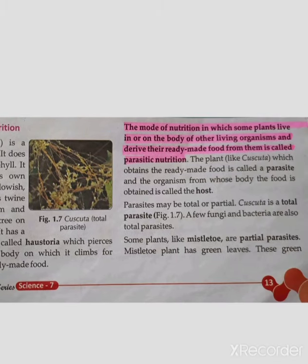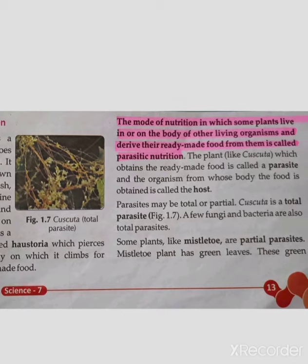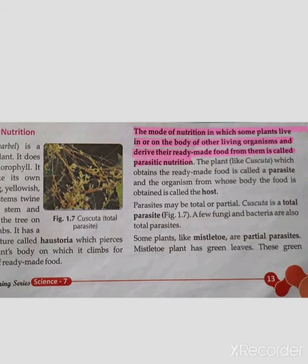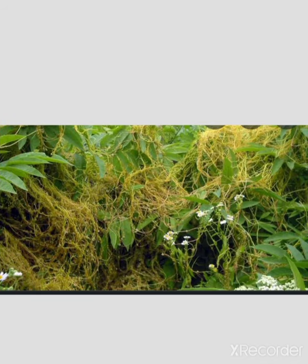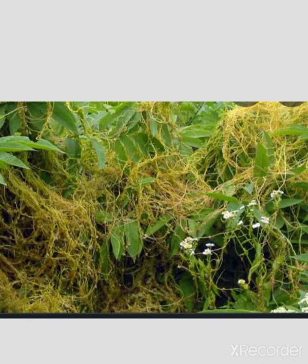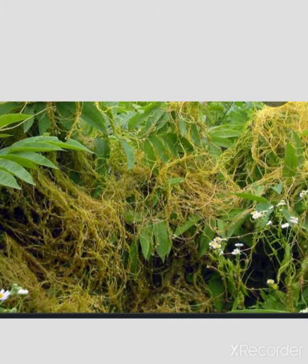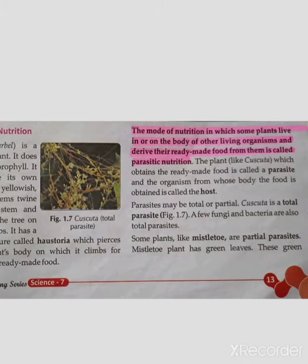The plant which obtains ready-made food is called a parasite, and the organism from whose body the food is obtained is called the host. In this picture, the plant with green leaves is the host, and the Cuscuta is the parasite.